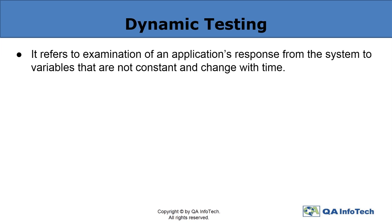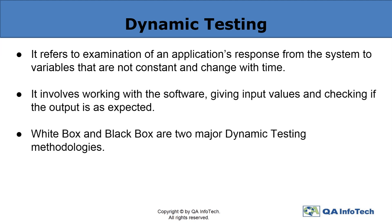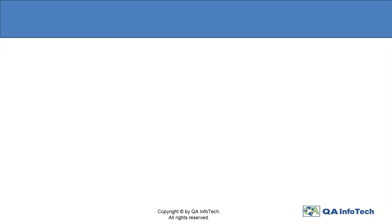The second type, dynamic testing, essentially involves interaction with the software by giving inputs and checking whether the output is as expected or not. This technique is basically a validation activity which constitutes two methodologies, namely white box and black box testing.